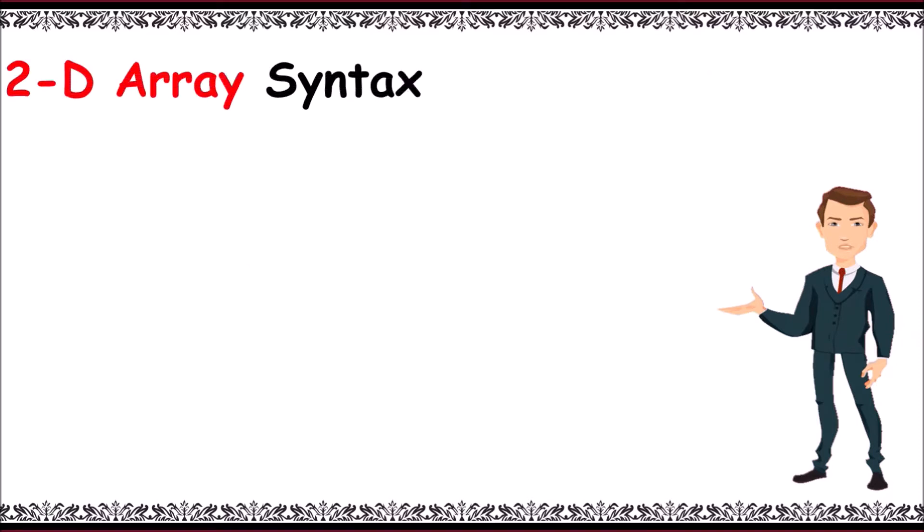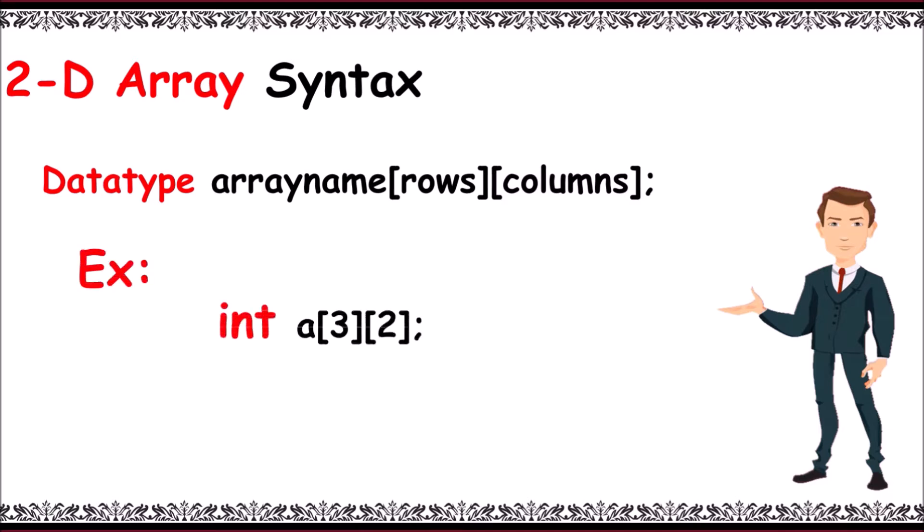Now, the 2D array syntax will be like data type, space, array name, rows, columns. For example, for integer array, int a[3][2]. For float, float marks[4][5].